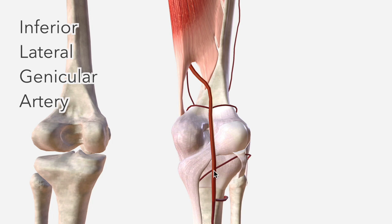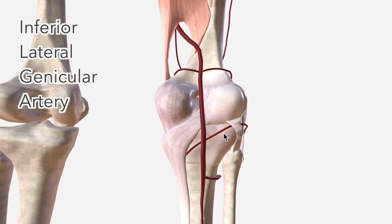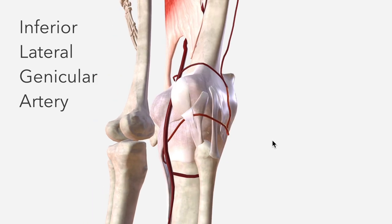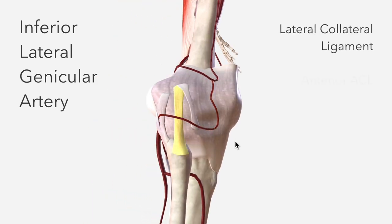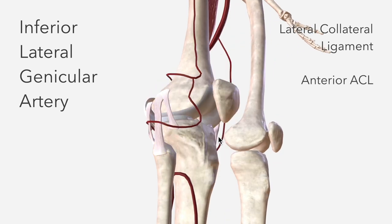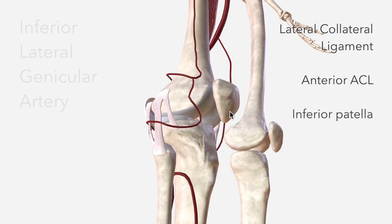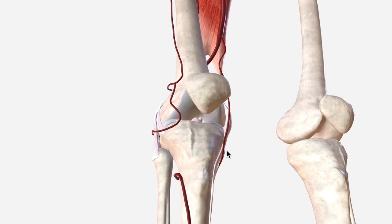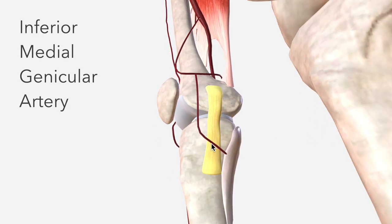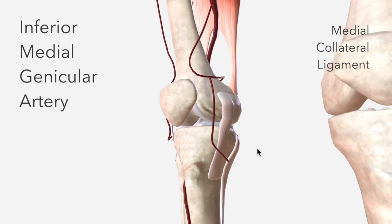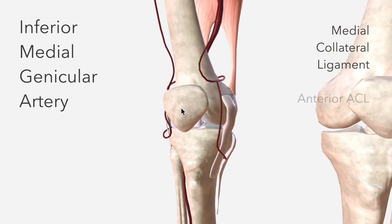The inferior lateral genicular artery curves around the lateral tibia, supplying the lateral collateral ligament as well as the anterior ACL and the inferior patella. Then the inferior medial genicular artery does the same on the other side, supplying the medial collateral ligament as well as the anterior ACL and the inferior patella.